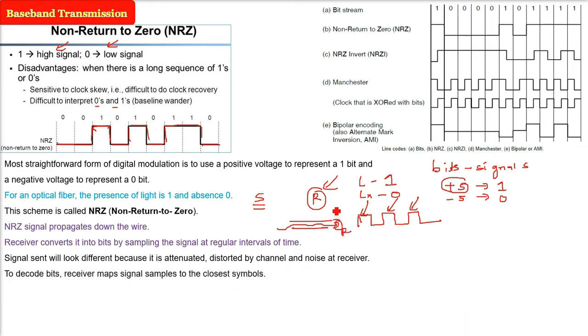You may get some noise at receiver. So, in order to decode the bits at the receiver end, the receiver needs to map signal samples to the closest possible. If some positive voltage is there, it will say, oh, it may be 1. So, for this NRZ, a positive voltage will be taken as 1 and the negative voltage will be taken as if 0 has been sent by the sender.